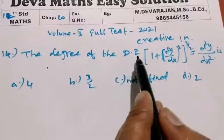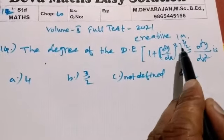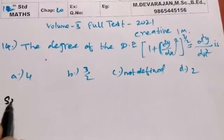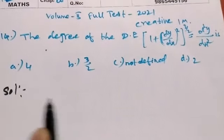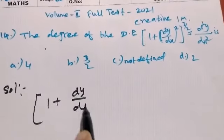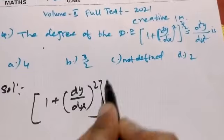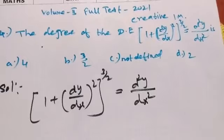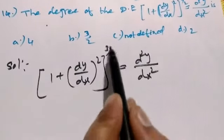The degree of the differential equation: [1 + (dy/dx)²]^(3/2) = d²y/dx². So the degree of the differential equation [1 + (dy/dx)²]^(3/2) = d²y/dx².